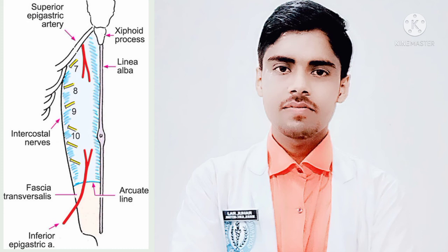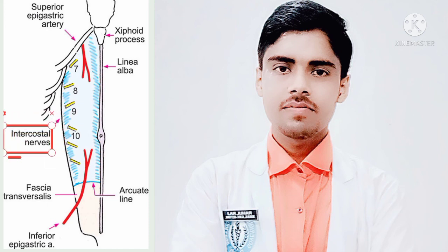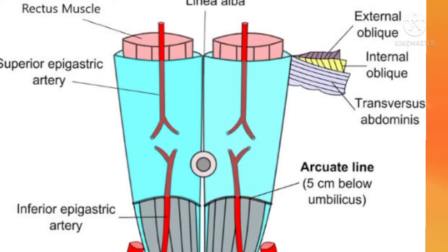Regarding nerves, the rectus sheath contains the lower 5 intercostal nerves and the subcostal nerve, as you can see in the figure. The main function of the rectus sheath is to check the rectus muscle during contraction, thus increasing the efficiency of the muscle. It also maintains the strength of the anterior abdominal wall.